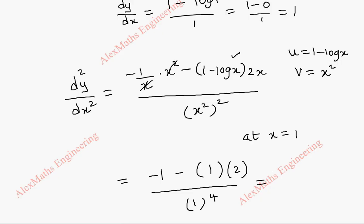Finally, in the numerator, it is minus 3. Denominator is 1. So we have minus 3.